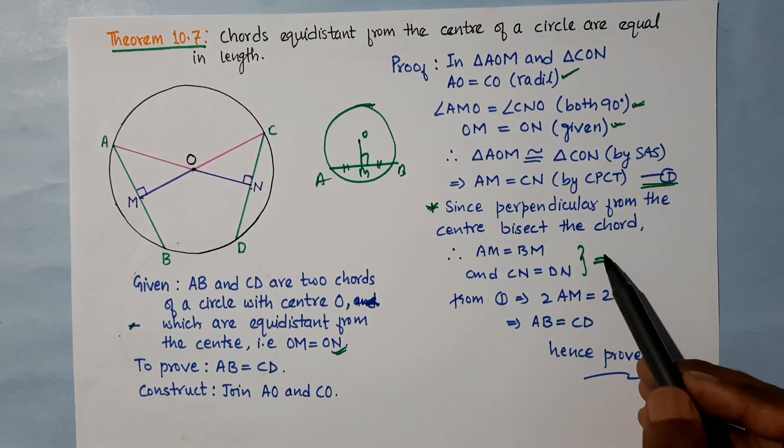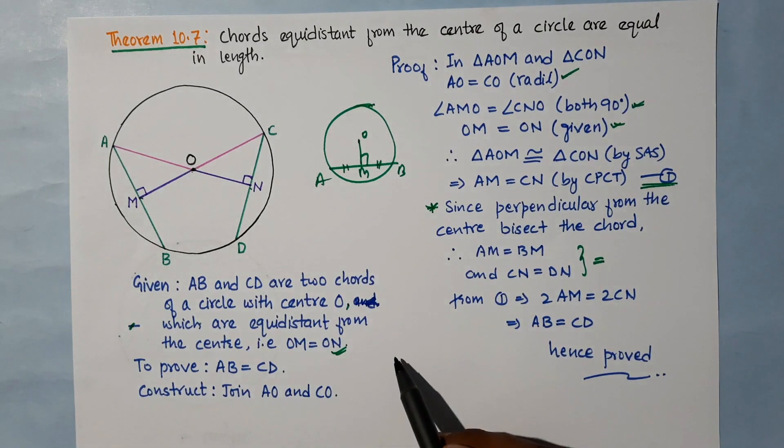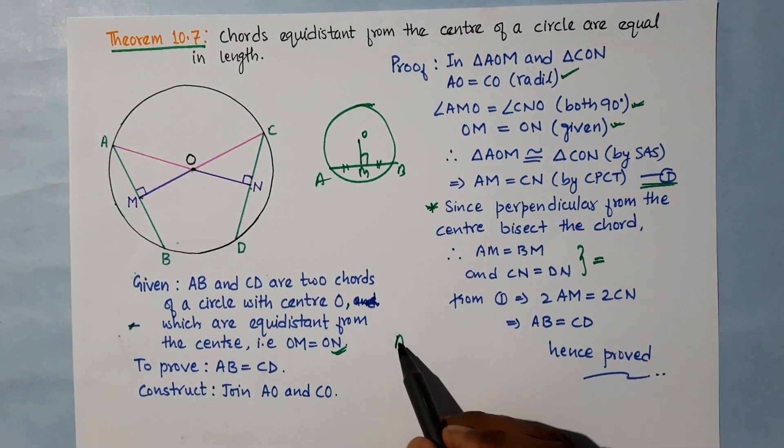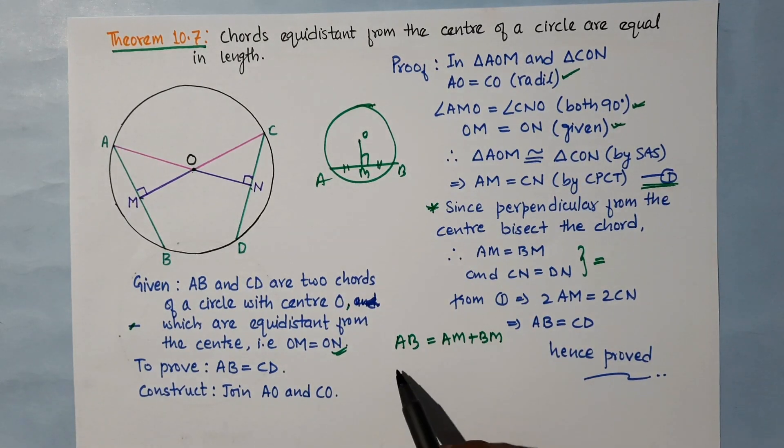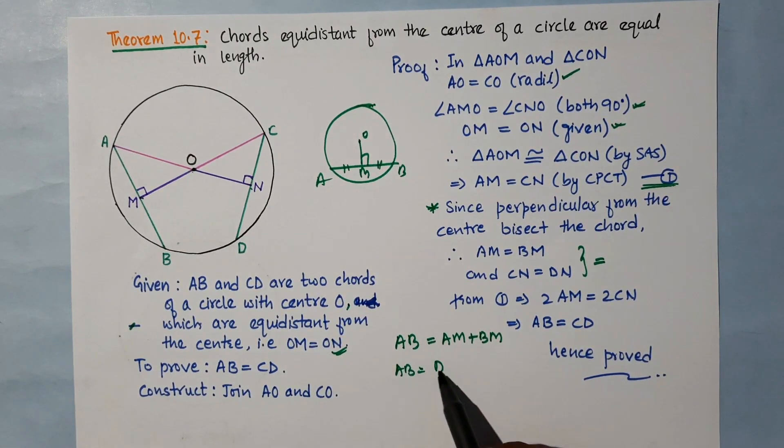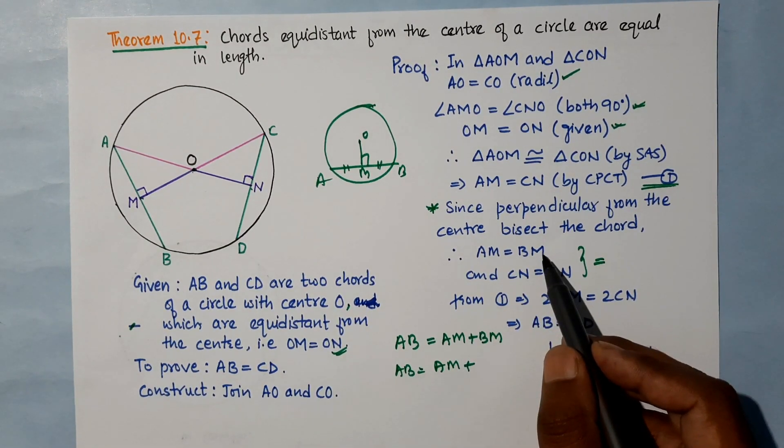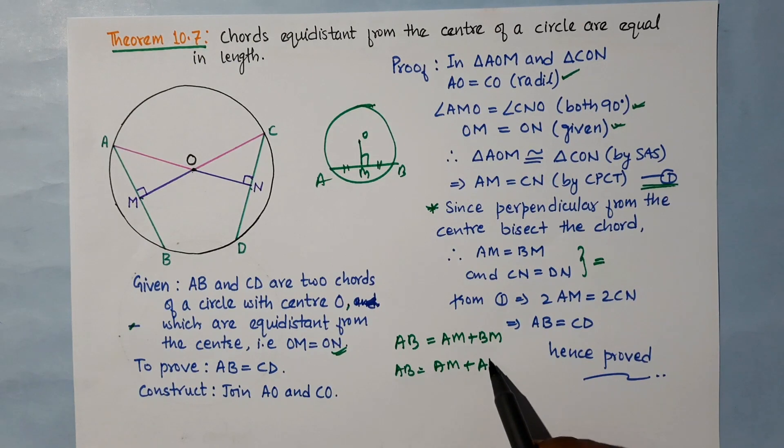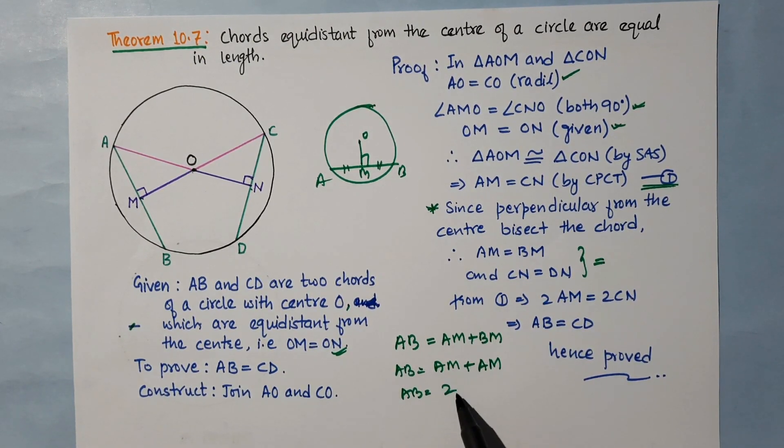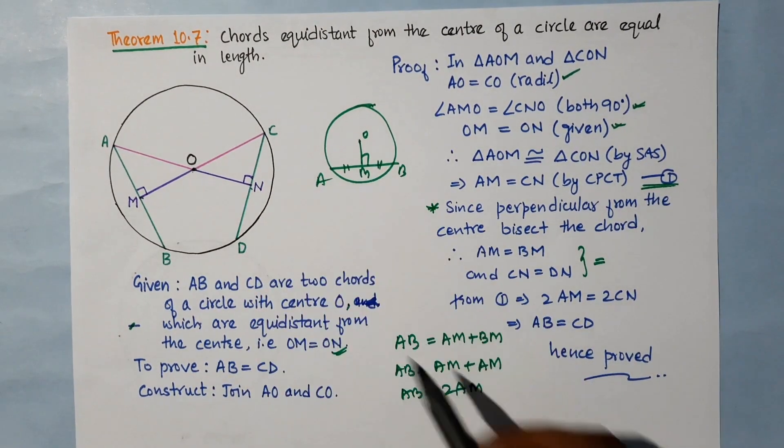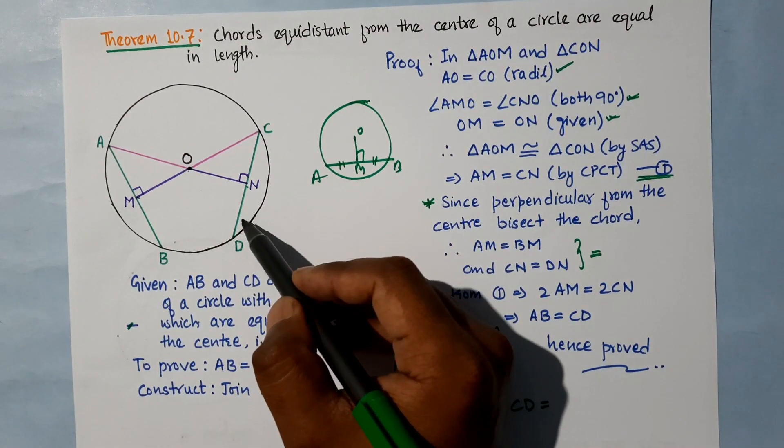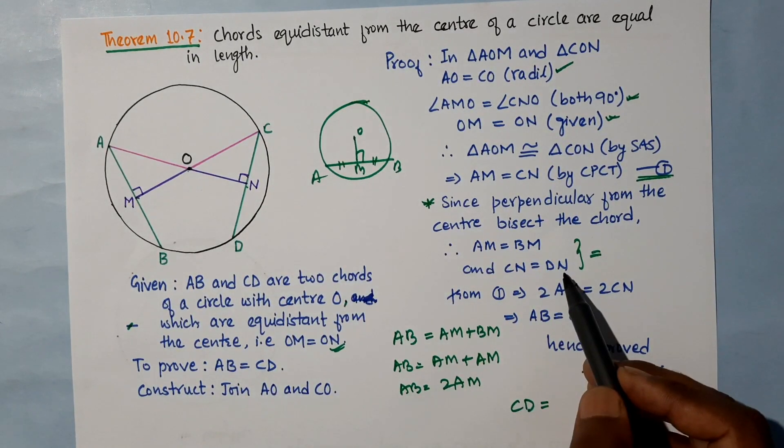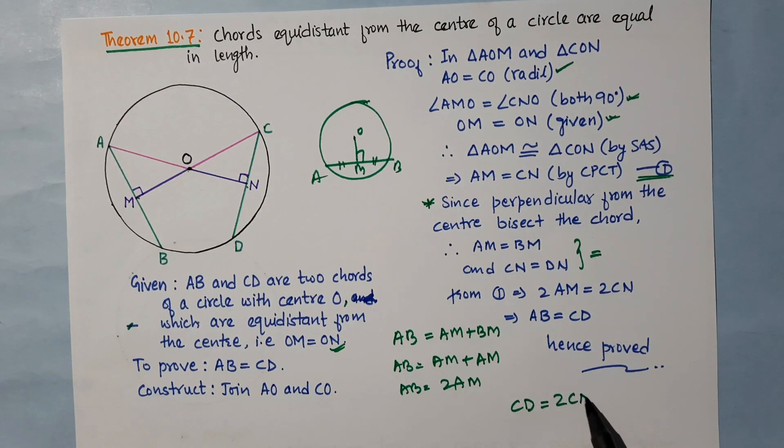AB is equal to AM plus BM. Since AM equals BM, AB is equal to 2AM. Similarly, CD is equal to CN plus DN. Since CN equals DN, CD is equal to 2CN.